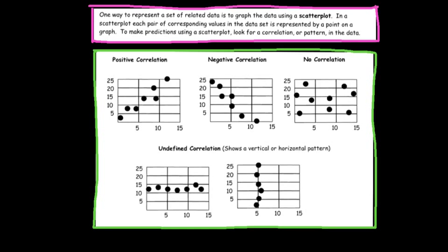First, we're going to look at a positive correlation. A positive correlation means that as one variable increases, the other also increases. We want to see a trend of the points increasing or going up. On a scatter plot, we don't always connect the dots — the point is to draw a line of best fit. A line of best fit generally goes through the data, with most points falling close to the line, some above and some below. With positive correlation, we're looking at it increasing.